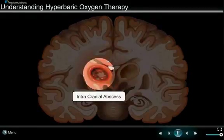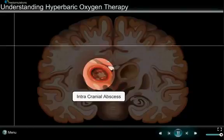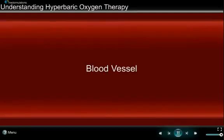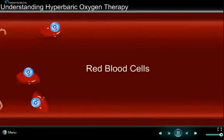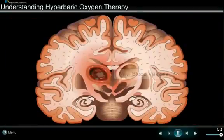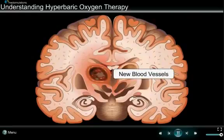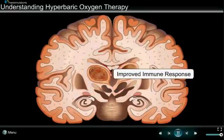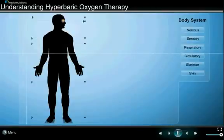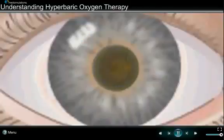An intracranial abscess is a pus-filled cavity in the brain. Bacteria present in your blood can cause this infection. Hyperbaric oxygen therapy increases the oxygen concentration in the blood and kills these bacteria. Due to the increase in oxygen, new blood vessels develop in the affected areas, improving the effectiveness of antibiotics and the body's immune response, which helps to clear the abscess from the brain.